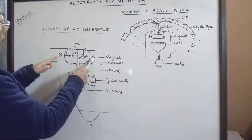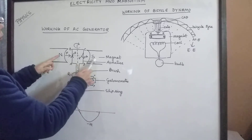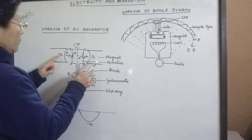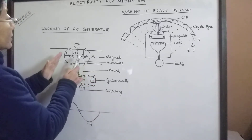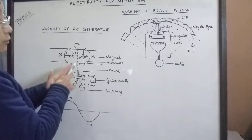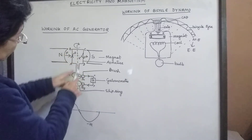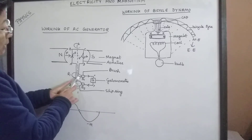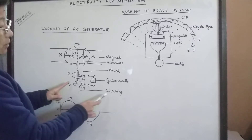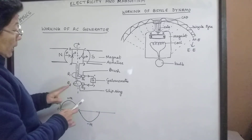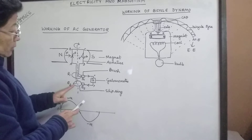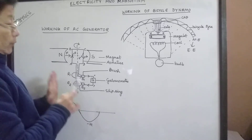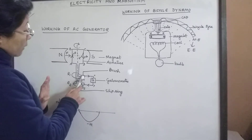There are two magnets — a north pole and a south pole — to create a magnetic field. Magnetic lines of force will always be passing from the north pole to the south pole. In the middle there is an armature, which is made up of insulated copper wire wound into a rectangular shape. There are two ends of the armature, and these two ends are fitted with rings called slip rings — ring 1 and ring 2. Ring 1 is for this end and ring 2 is for this end. These rings do not touch each other and do not touch each other's wire.